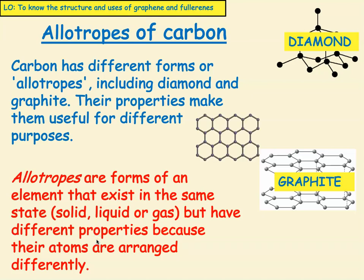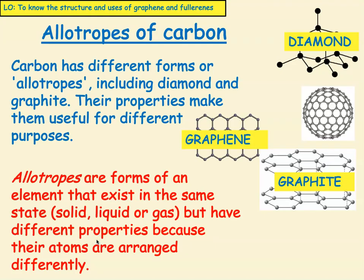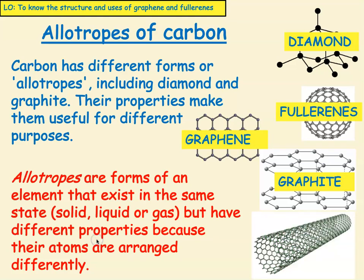We're going to look at this one in a minute — this is called graphene. And that is a fullerene called a buckyball. And that is a nanotube, which is also made of carbon.